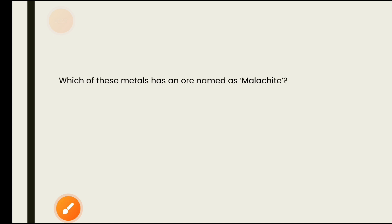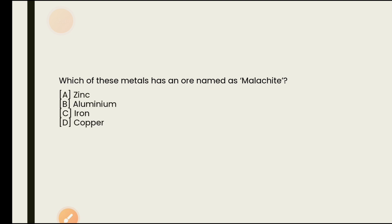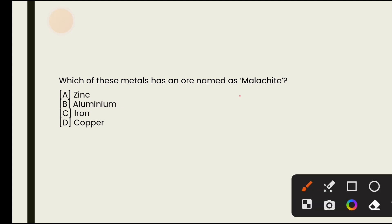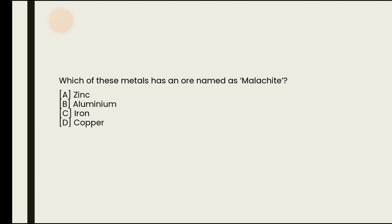Next: which metal has an ore named malachite? Options are zinc, aluminium, iron, copper. Malachite is a famous ore of copper, from which copper is extracted. The answer is copper.